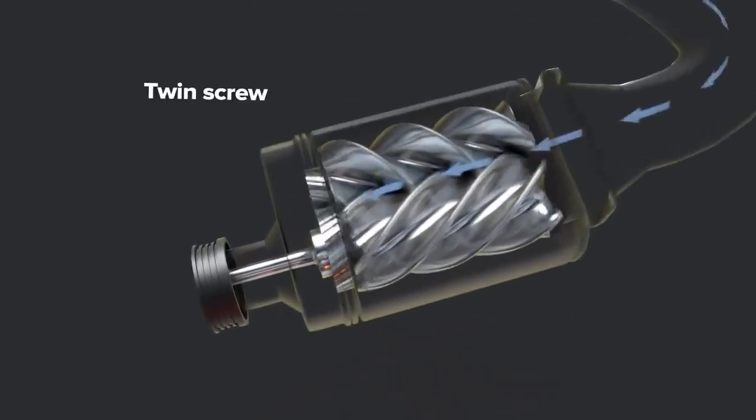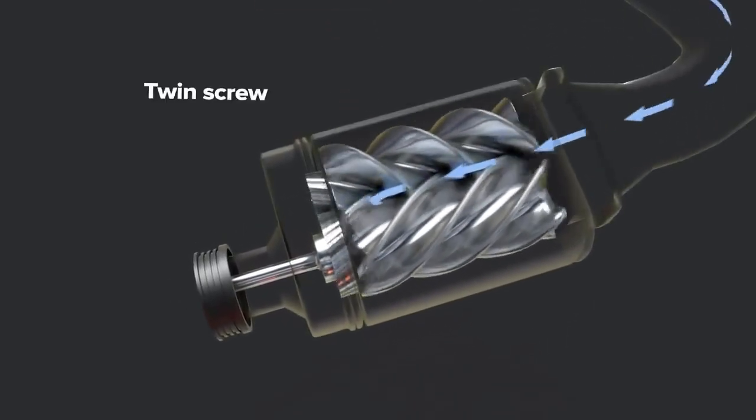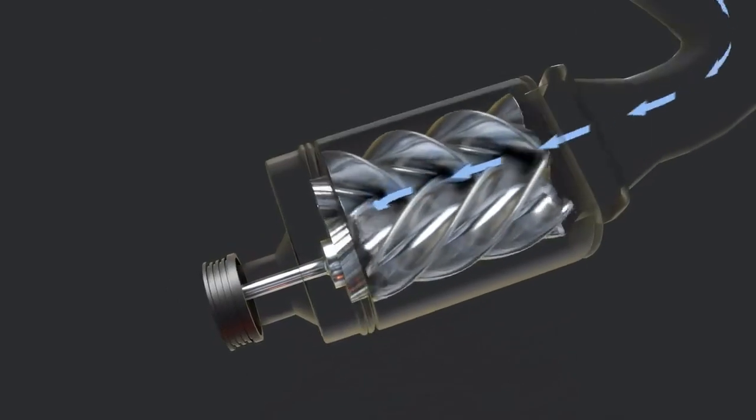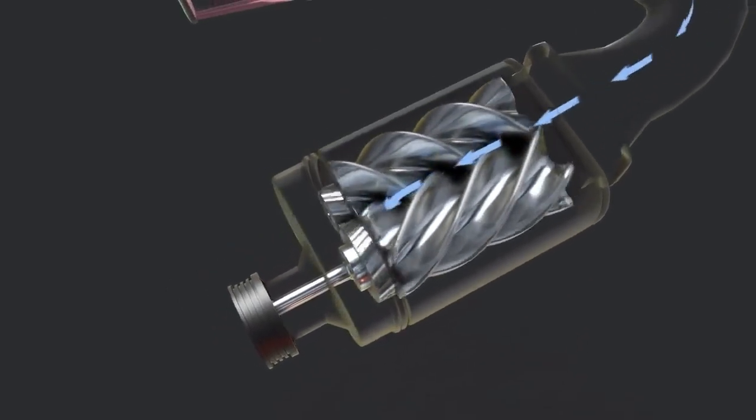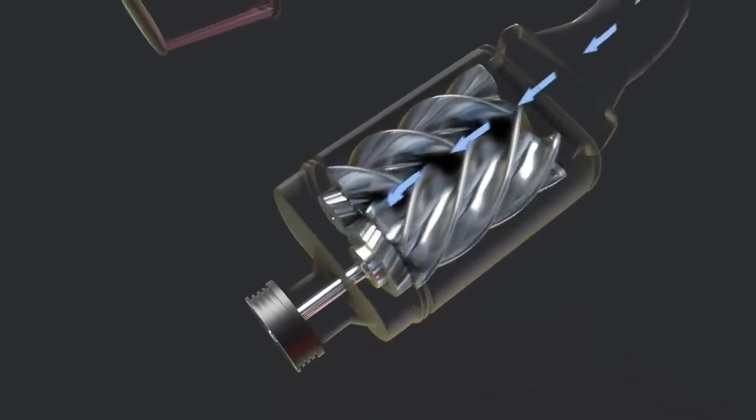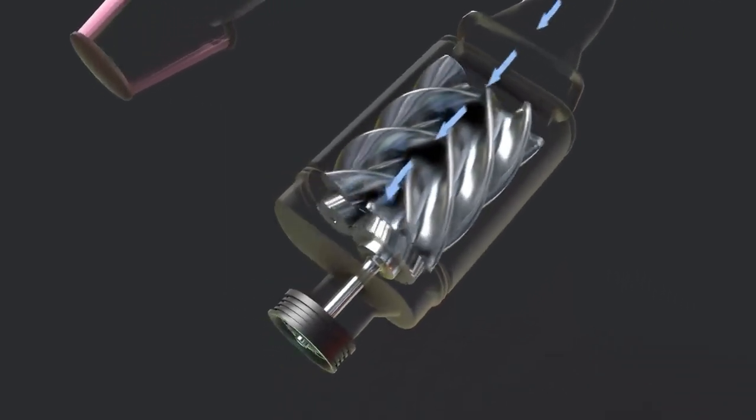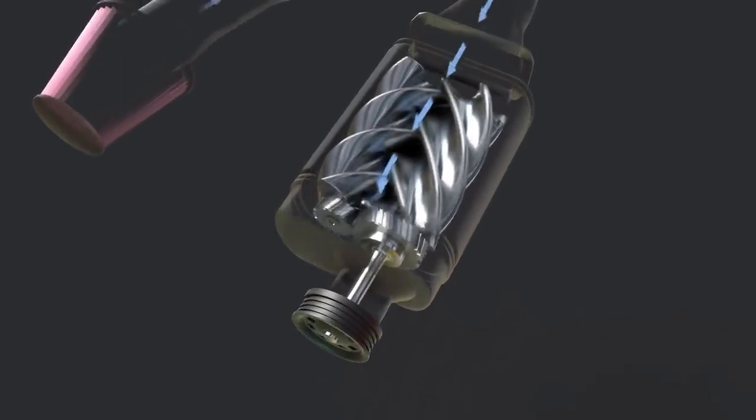Twin screw. Twin screw type superchargers feature complex rotors with intricately designed lobes that compress air as it moves through the unit. This increased complexity results in better performance but also higher manufacturing cost.